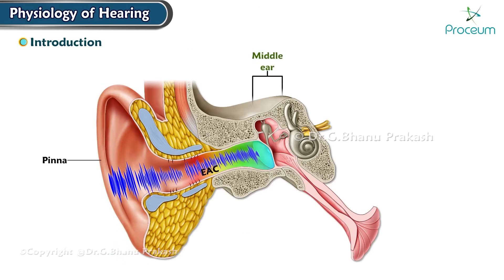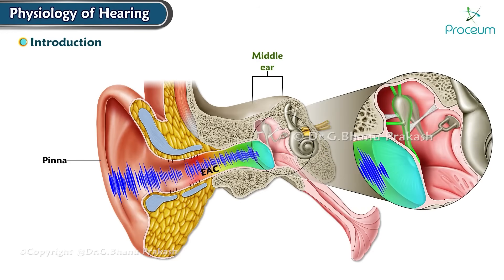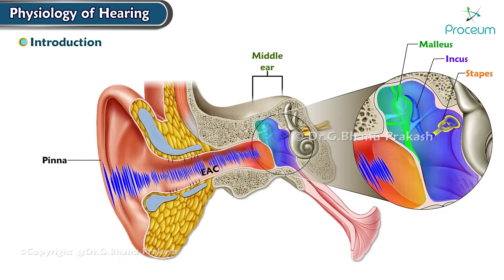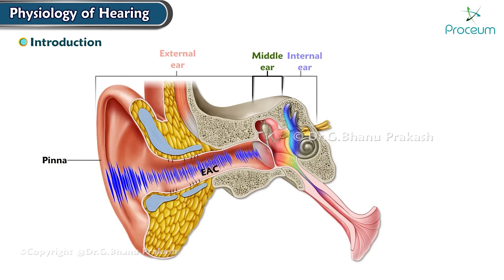The middle ear is an air-filled space located behind the eardrum. The middle ear consists of three small bones called ossicles: the malleus, incus, and stapes. These bones amplify the sound waves and transmit them from the eardrum to the inner ear.